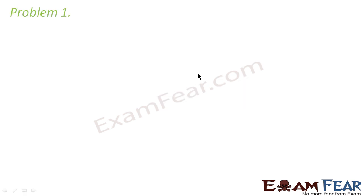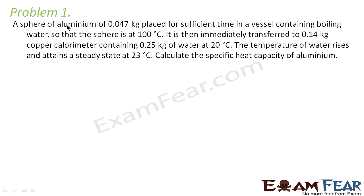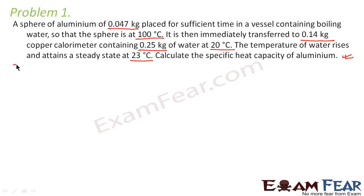Now let us look at a problem based on a calorimeter. A sphere of aluminium of 0.047 kg is placed for sufficient time in a vessel containing boiling water so that the sphere is at 100 degree Celsius. It is then immediately transferred to a 0.14 kg copper calorimeter containing 0.25 kg of water at 20 degree Celsius. The temperature of water rises and attains a steady state at 23 degree Celsius. Calculate the specific heat capacity of aluminium.